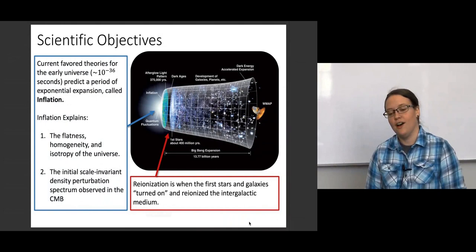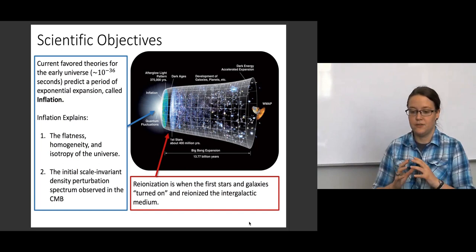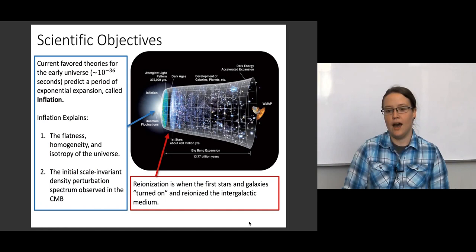So to start off, just a little bit of background on the science goals for the CLASS telescopes. The first period of the early universe that we're looking at explaining is this period called inflation. This is a period of super exponential expansion in the early universe where the universe goes from something like the size of an atom to the size of a galaxy or larger in a very short period of time.